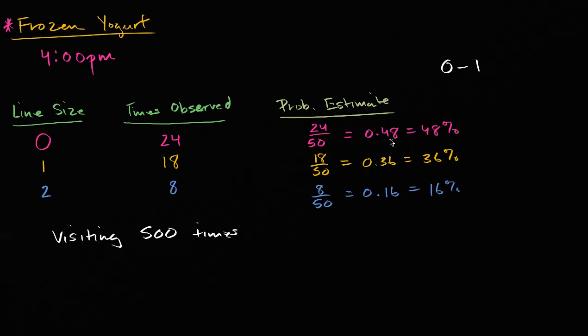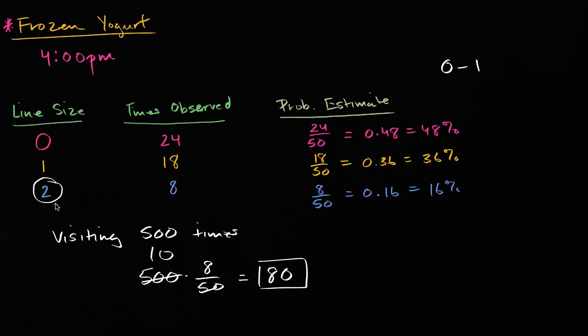So based on your estimates of the probability of having no line, of a one person line, or a two person line, based on your observation, how many times in your next 500 visits, would you expect there to be a two person line, based on your observations so far? Well, it's reasonable to say, well, a good estimate of the number of times you'll see a two person line when you visit 500 times. Well, you say, well, there's going to be 500 times, and it's a reasonable expectation, based on your estimate of the probability, that 0.16 of the time you will see a two person line, or you could say eight out of every 50 times. And so what is this going to be? Let's see, 500 divided by 50 is just 10. So you would expect that 80 out of the 500 times, you would see a two person line.